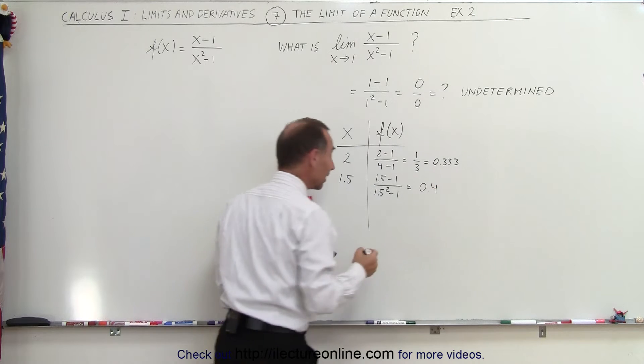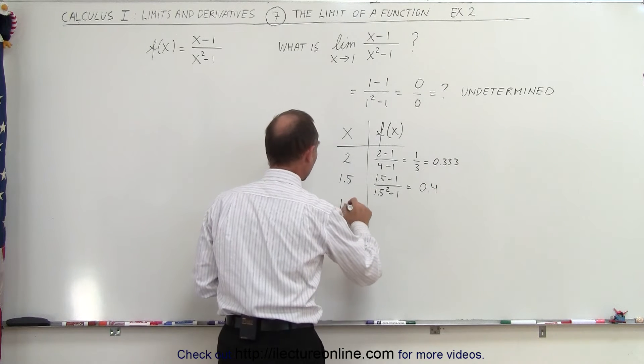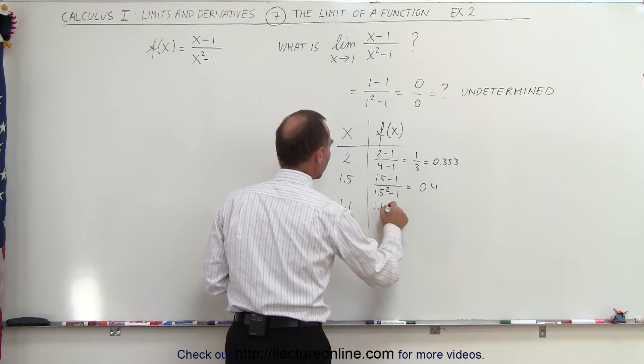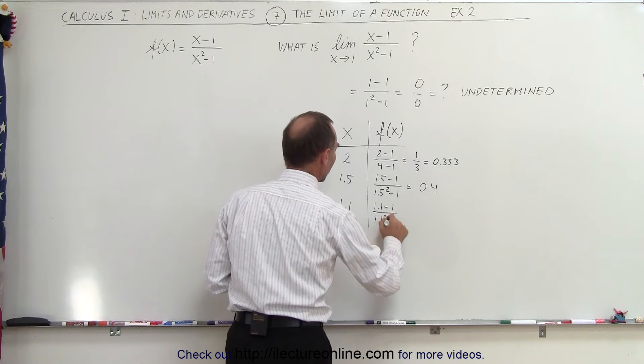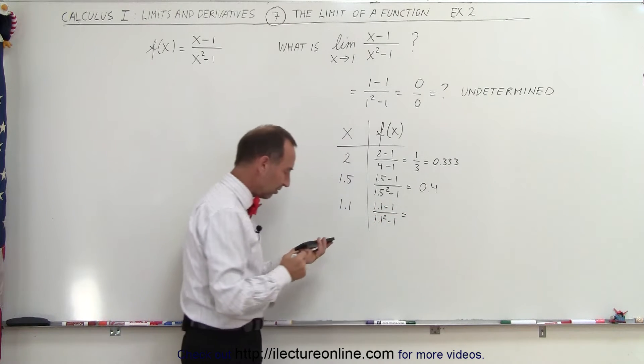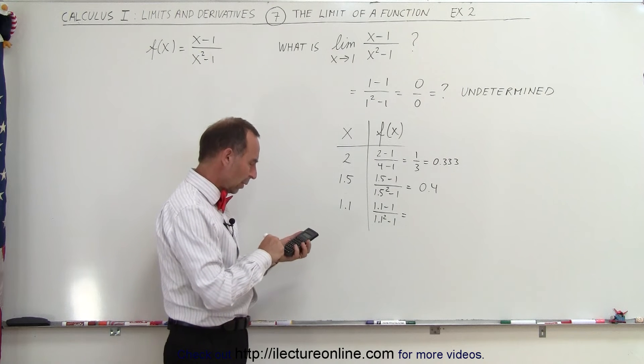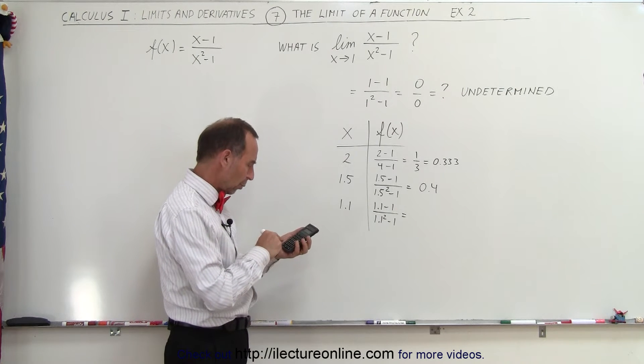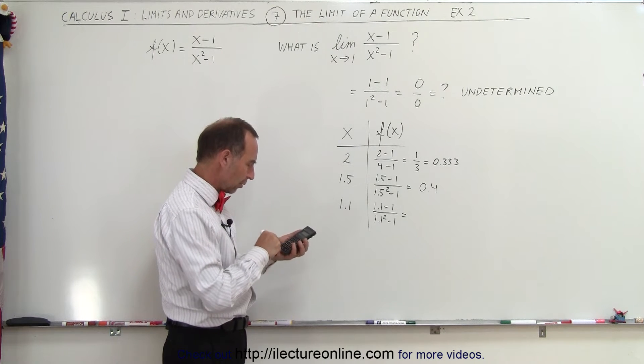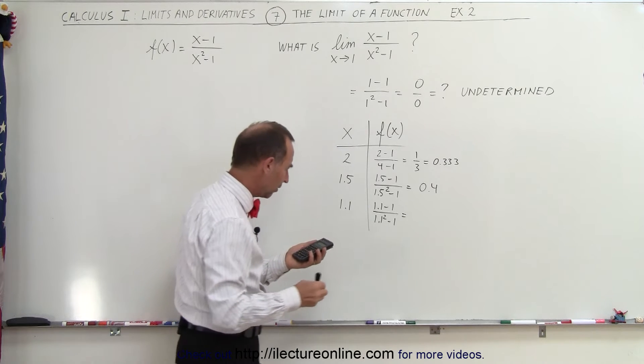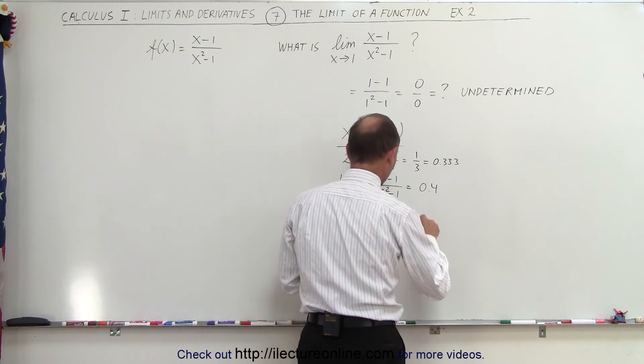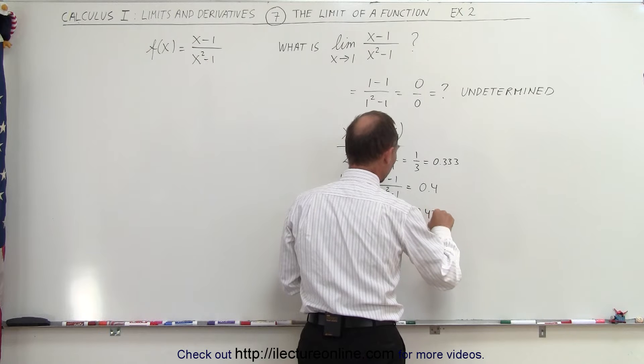All right, now let's get a little closer to 1 again. Let's try 1.1. And so here we get 1.1 minus 1 divided by 1.1 squared minus 1. Let's see what that is equal to. So we get 0.1 divided by the quantity 1.1 squared minus 1 equals, and now we get 0.476.